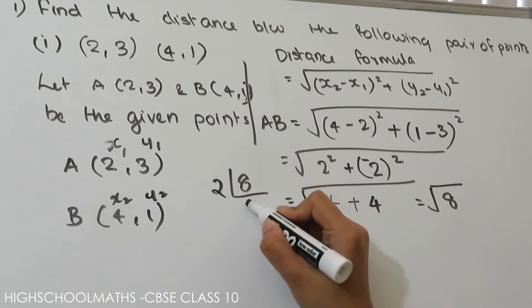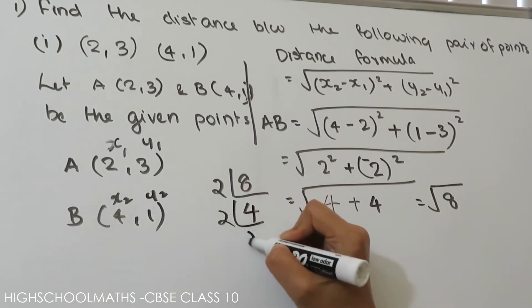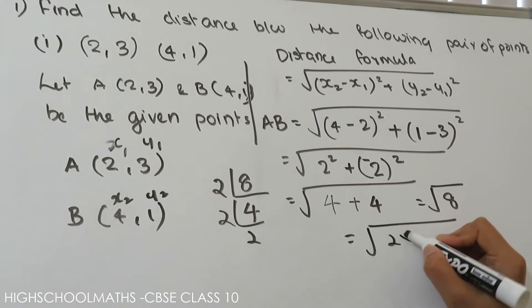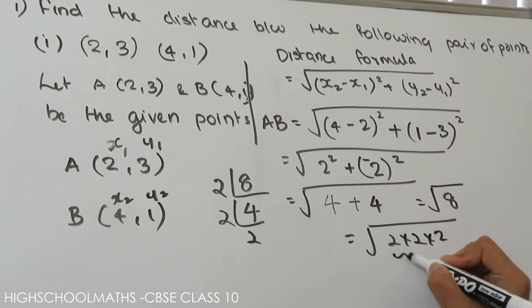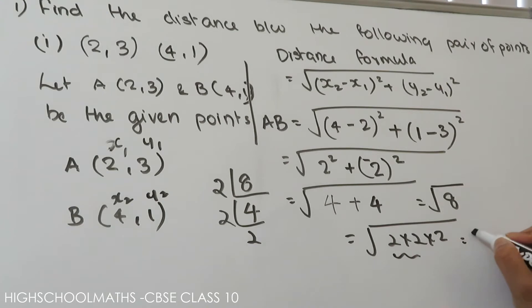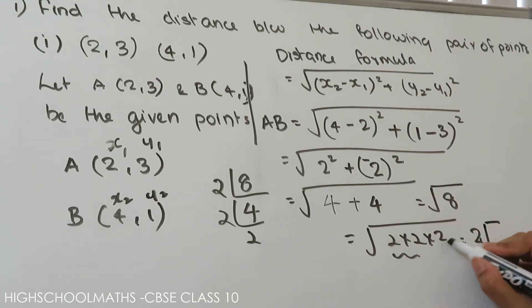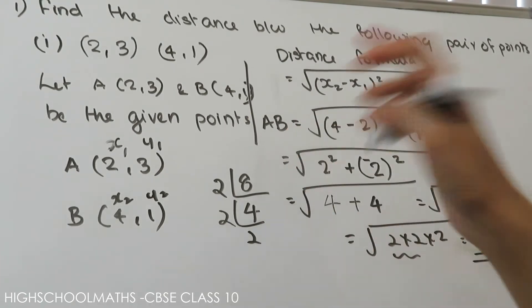Simplifying: we get square root of 8. Factorizing: square root of 2 into 2 into 2, which gives us 2√2. So the distance AB is 2√2 units.